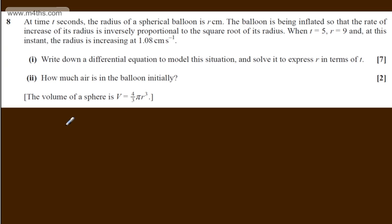So we're looking now at dr/dt. We're told that it's inversely proportional to the square root of its radius. So introducing k, where k is a constant, I can write that dr/dt will be equal to k over root r.